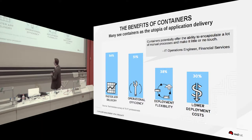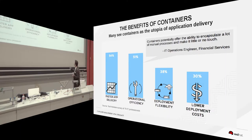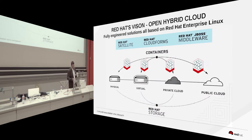We have a lot of benefits with containers. One is faster application delivery — we can build and deploy applications much faster. We are operationally more efficient because containers need 10 times fewer resources: 10 times less CPU, 10 times less memory. And there's deployment flexibility for DevOps — you can run it everywhere you want — plus lower costs.